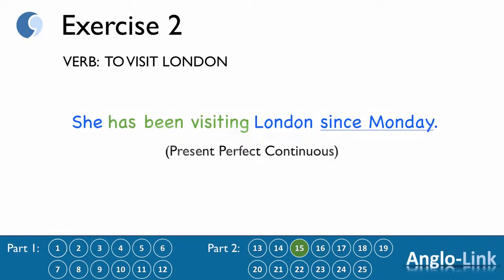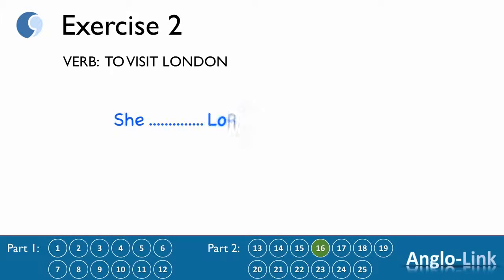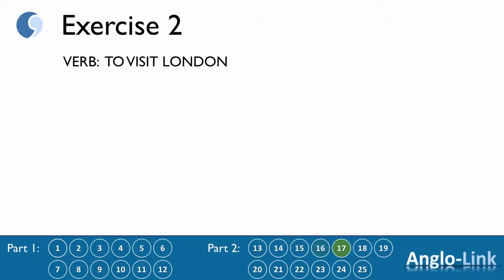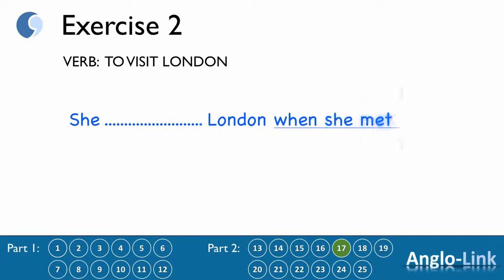Number 16: 'She ___ London three years ago.' Answer: 'She visited London three years ago.' Past simple. Number 17: 'She ___ London when she met him.' Answer: 'She was visiting London when she met him.' Past continuous.